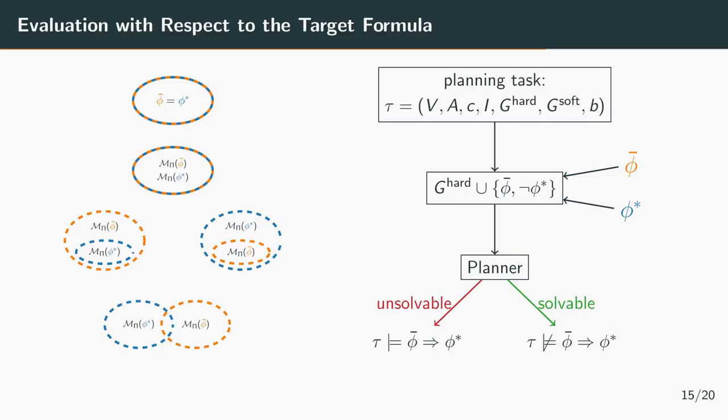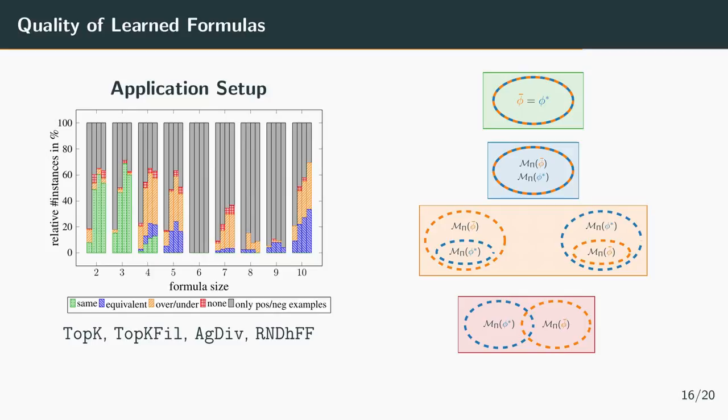Now let's get to the results. So first of all we want to analyze the quality of the learned formulas. Here each of the four bars corresponds to one of the four plan generation algorithms. On the x-axis we have the size of the target formula and on the y-axis the relative number of instances per category. Black corresponds to the instances where the planner only generated either positive or negative examples and so we couldn't even try to learn the formula. For small formulas of size 2 and 3 we can almost always learn the same formula, and for larger formulas we can either learn an equivalent one or at least an over or under approximation.